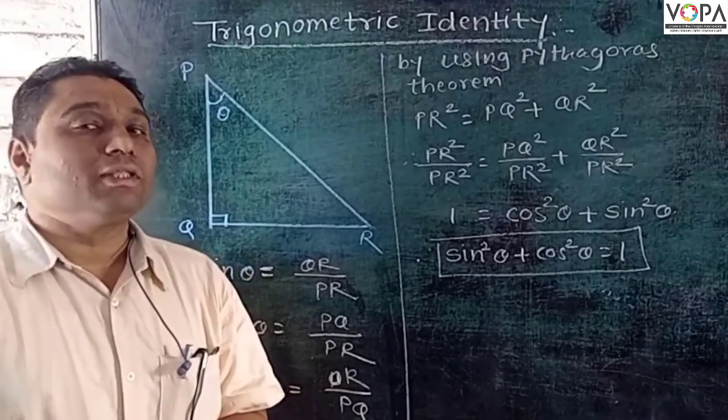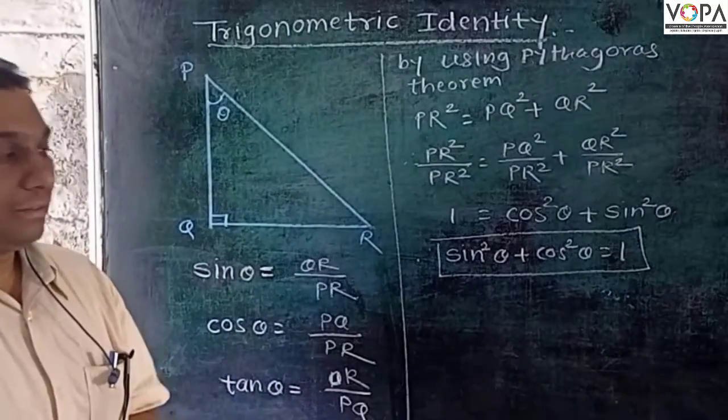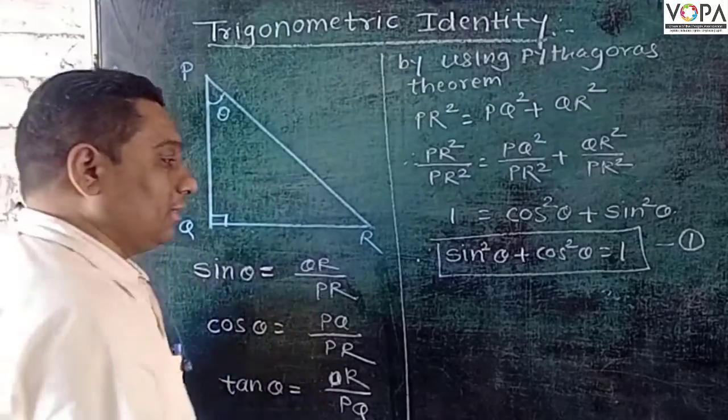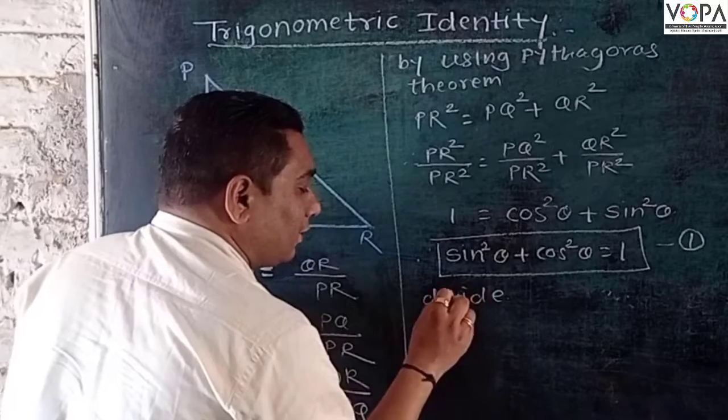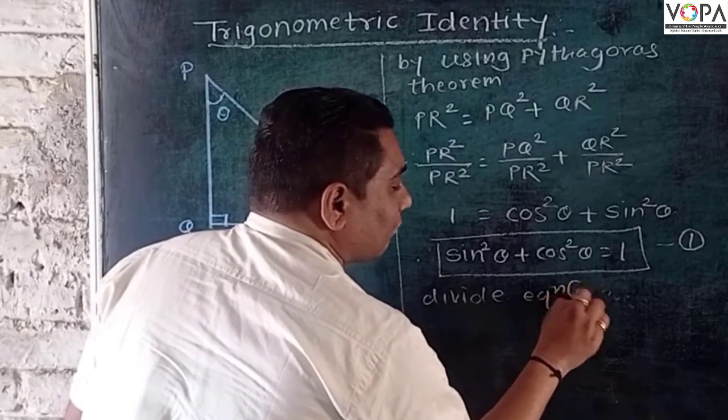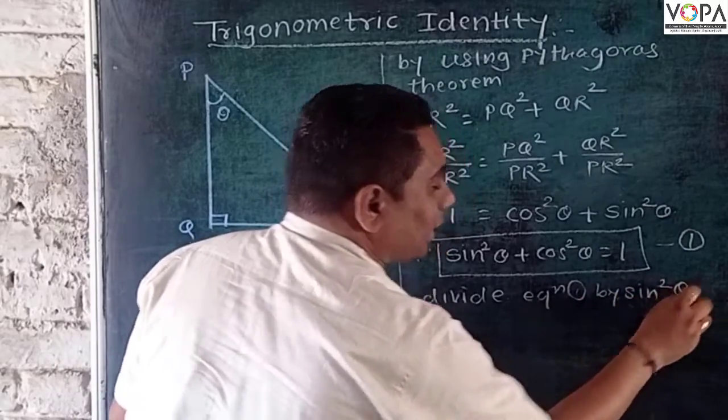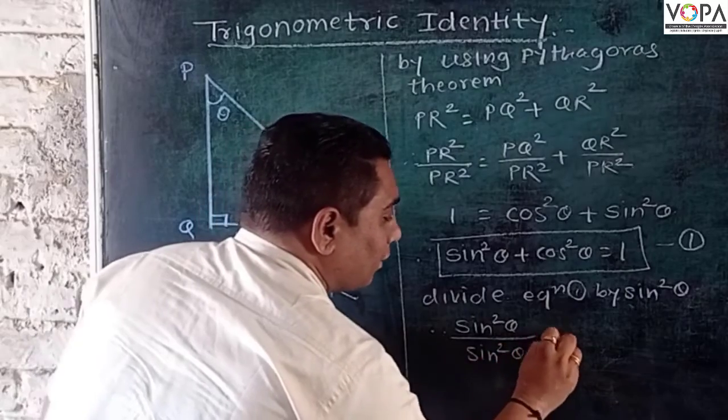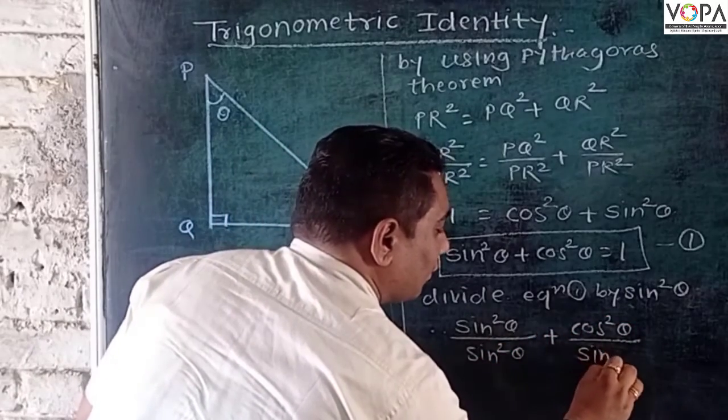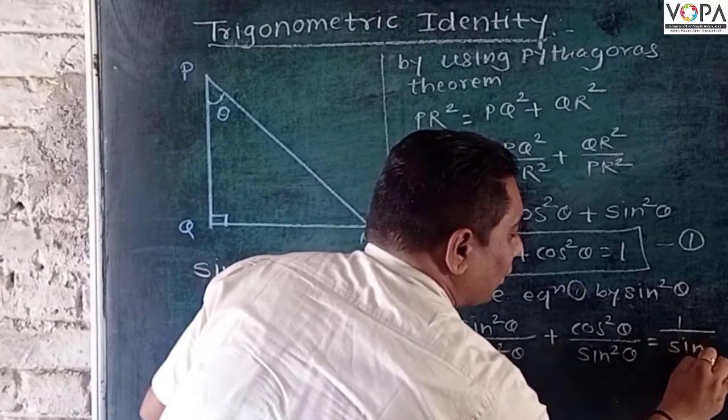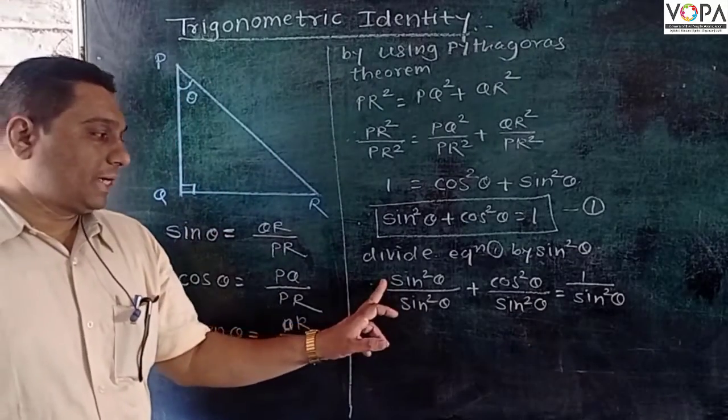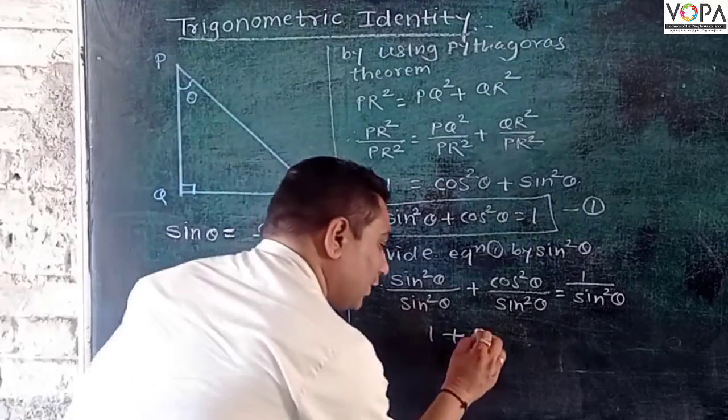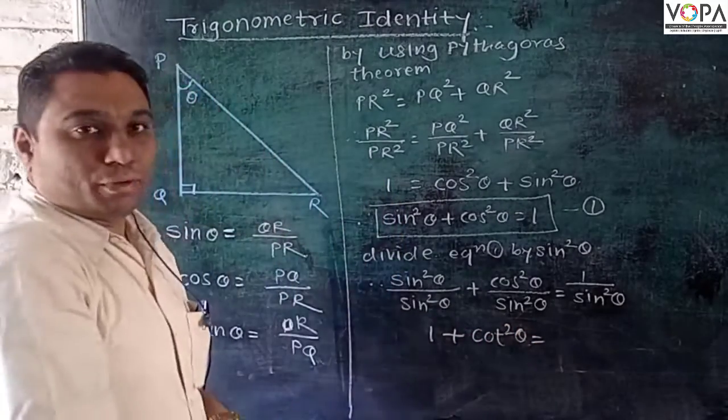Now we want to find out the next two trigonometric identities. This is equation number 1. Now I divide both sides by sin square theta. So divide equation 1 by sin square theta.